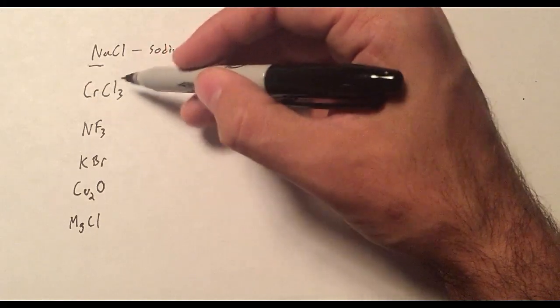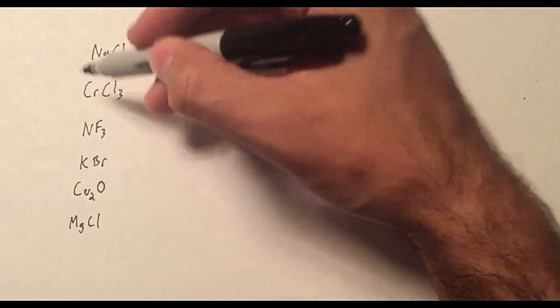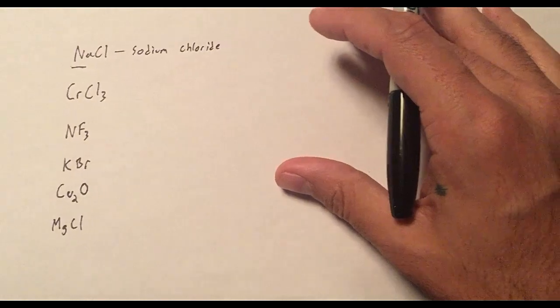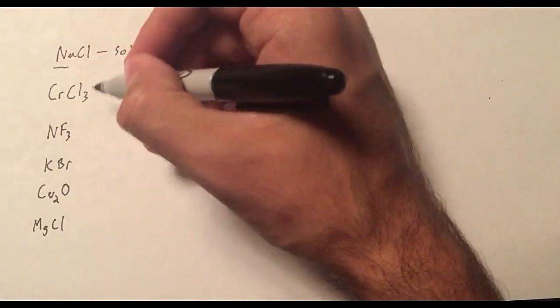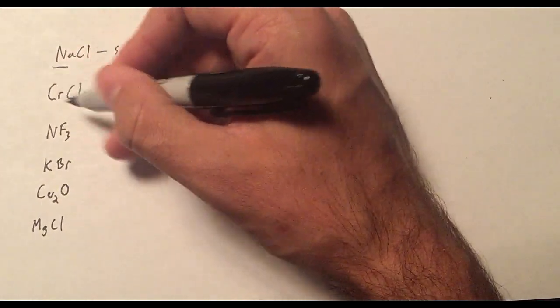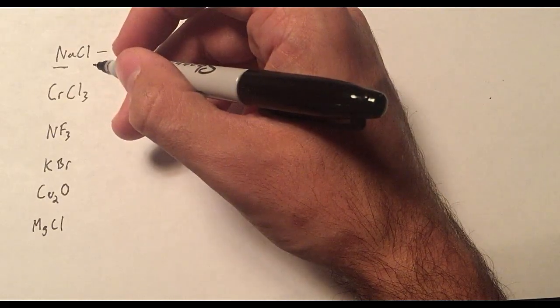and this whole compound doesn't have a charge at all, then chromium must have a charge of plus three. That makes sense to you. That way chromium having a charge of plus three will balance out the three negatives from each chlorine atom.